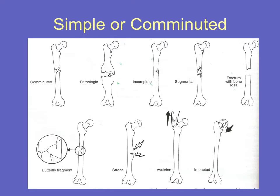An incomplete fracture occurs when only one cortex is involved. A segmental fracture describes a bone broken in two separate places with a loose piece of diaphysis in the middle. A fracture with bone loss describes a segmental-type fracture where that piece of bone has been lost from the body. A butterfly fracture describes a triangular piece of bone, which can occur with any of the other fracture types — such as a transverse, oblique, or spiral fracture. It looks like a butterfly in profile, which is where it gets its name.